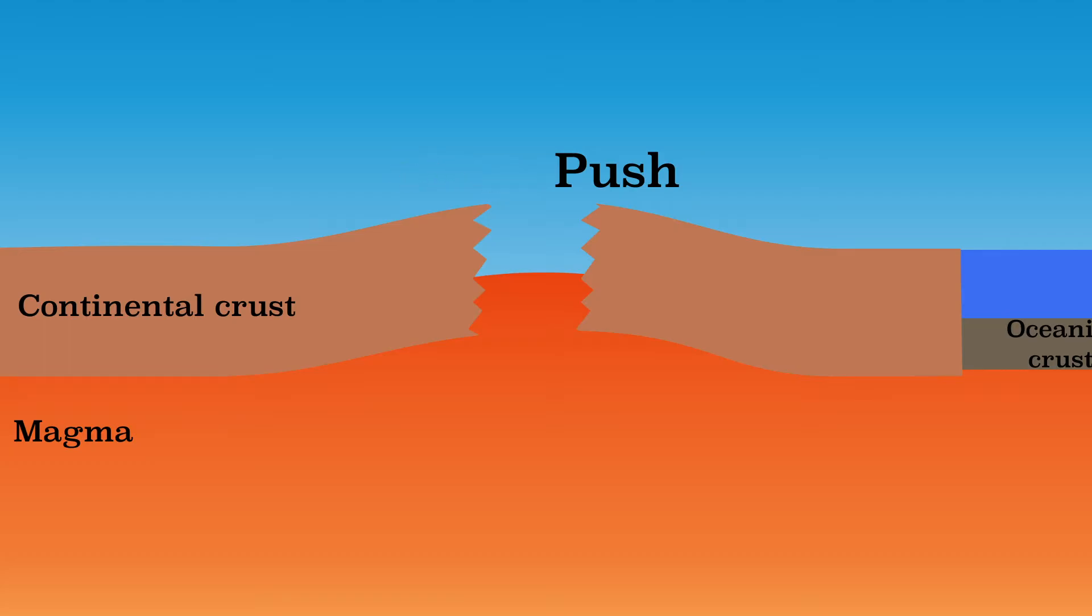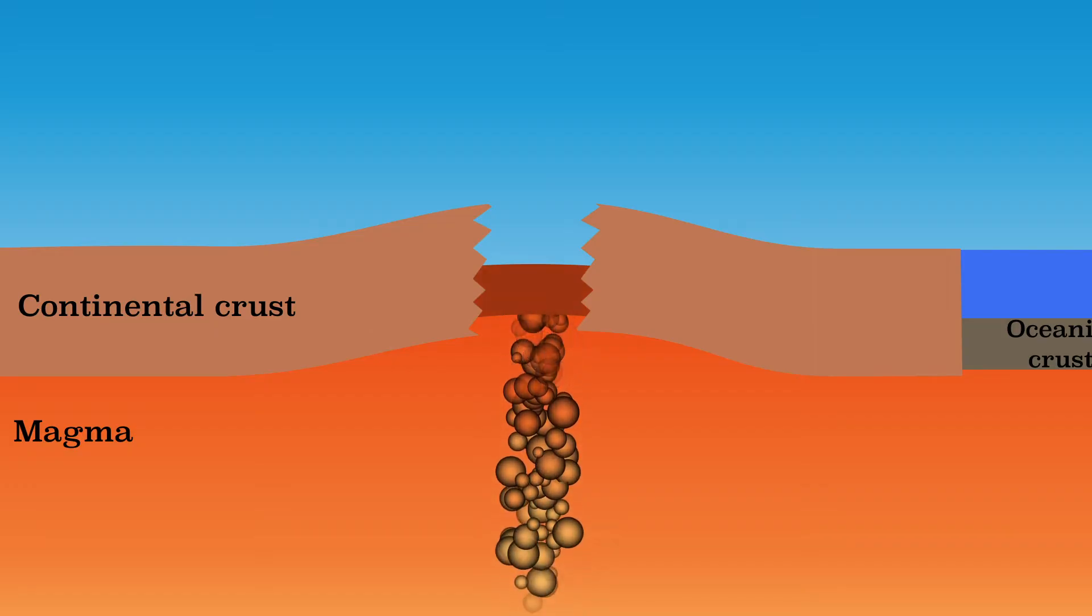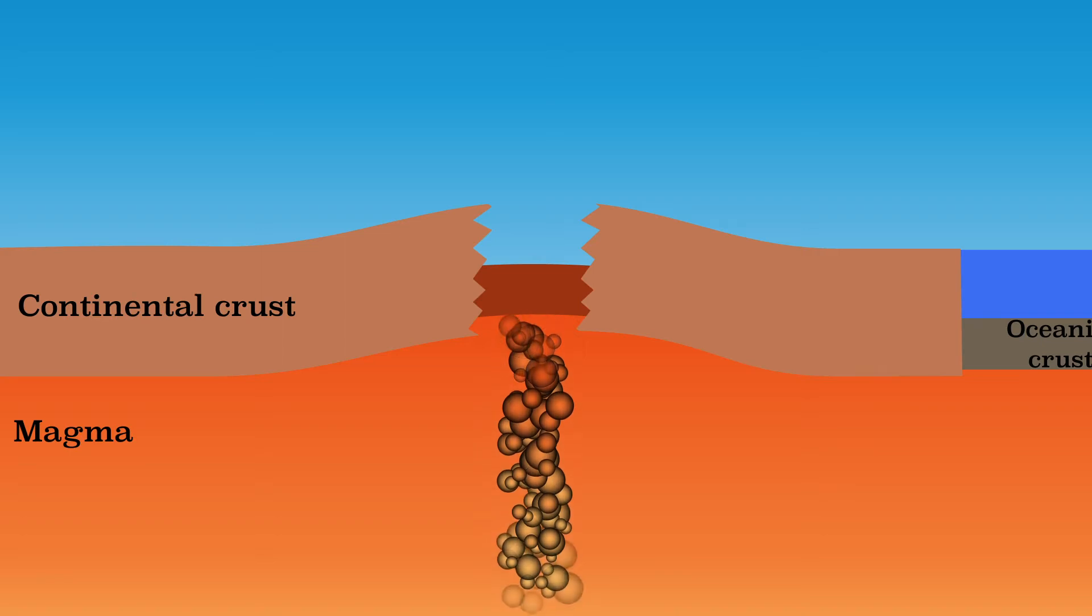A very long crack appears in the crust where the plates move apart. Here, material can rise from the mantle and solidify on the surface as basalt. This new crust is deeper than the previous continental crust. As a result, water flows to this low point.